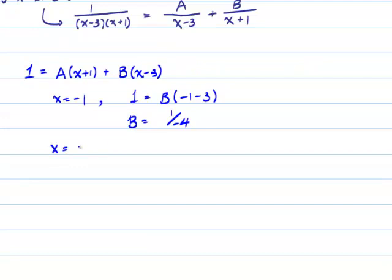And you do the same thing for the other terms. So let x equal 3. And what you end up with is that the b term disappears, and 1 is equal to a times 3 plus 1. And so the final result is this gives you a is equal to 1 over 4.